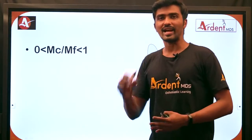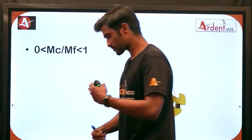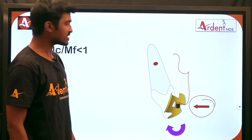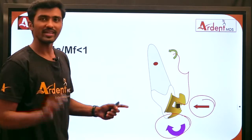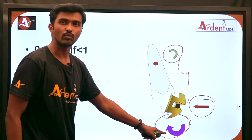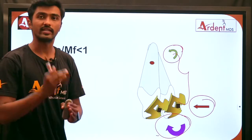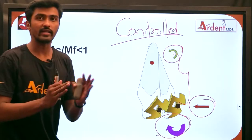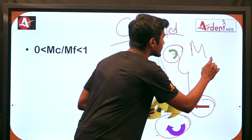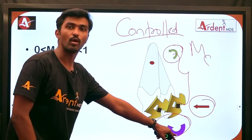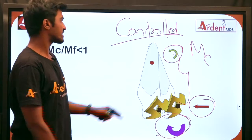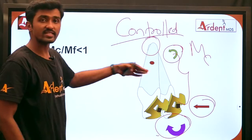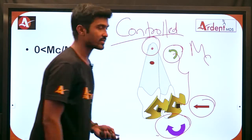In the second scenario, I apply a force at the bracket level at a distance from the center of resistance, giving me a moment of force. When I apply a counter moment that is smaller than the moment of force — that is, Mc/Mf is greater than 0 but less than 1 — I get controlled tipping. In controlled tipping, the root remains in the same position while only the crown moves, and the center of rotation is located at the root apex.